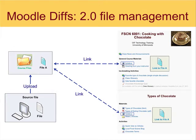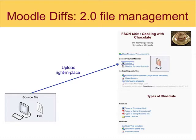The big change in the way that Moodle 2 deals with files as opposed to Moodle 1.9 is it allows you to completely circumvent the course files and upload the file right in place in a section. We're calling that uploading right in place. It essentially takes out half the uploading process, so you can take a file off your hard drive, add a resource in a section, and upload the file right there.